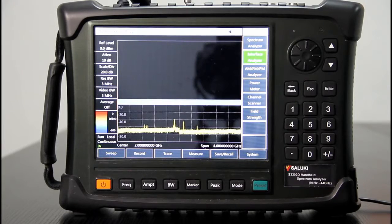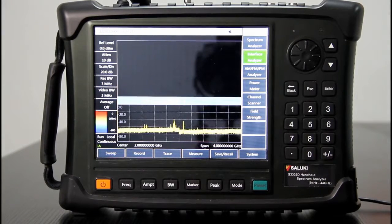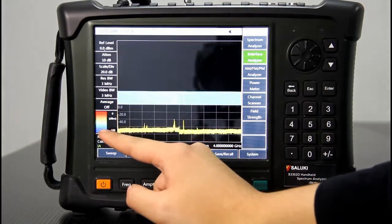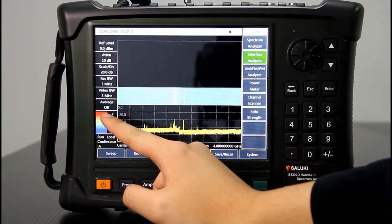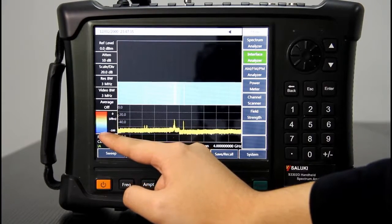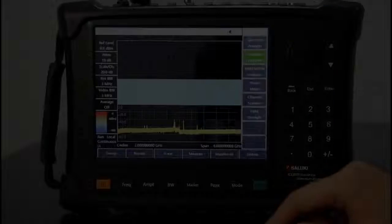It's basically a waterfall gram to show the possibility of a signal. Here you can see if the signal is quite strong, it will display red. And if there is no signal, it will display blue.